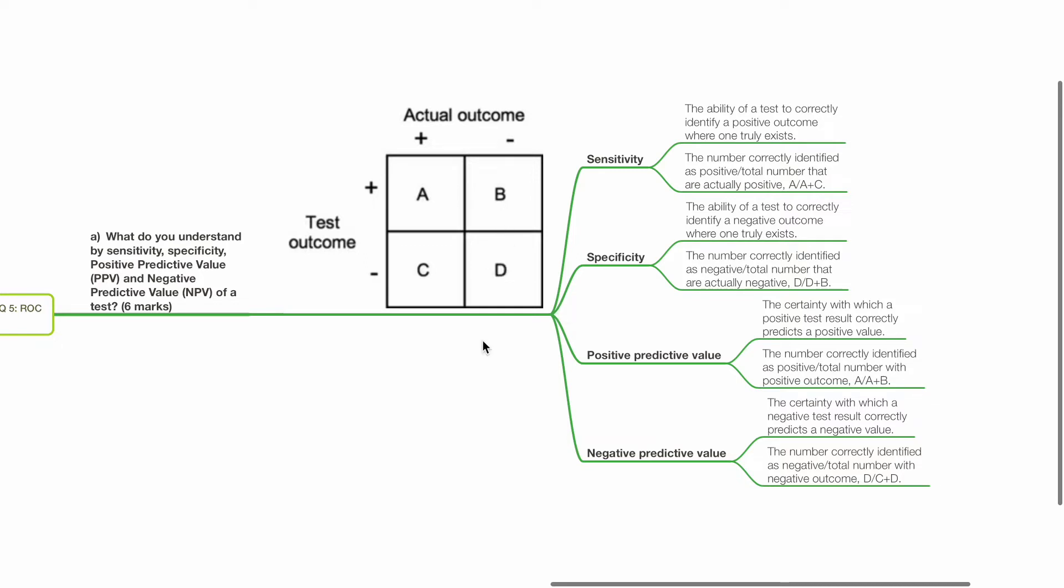Positive predictive value is the certainty with which a positive test result correctly predicts a positive value. It is the number correctly identified as positive divided by total number with positive outcome. A divided by A plus B.